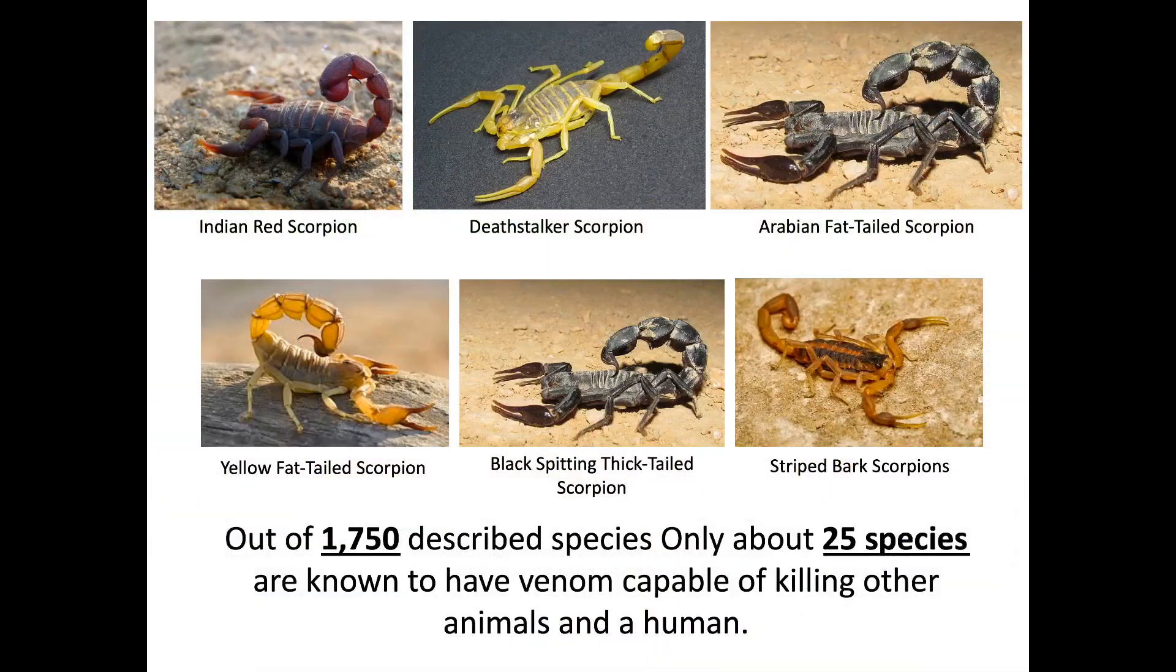Interestingly, out of 1,750 described species of scorpions, only about 25 species are known to have venom capable of killing other animals and humans.